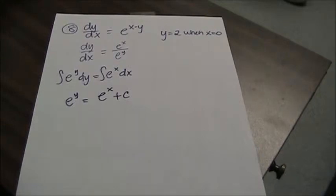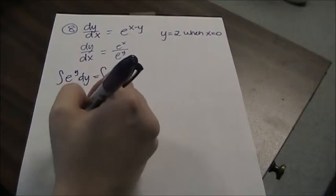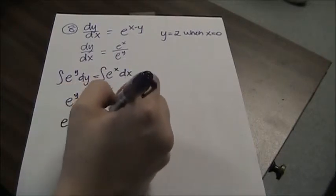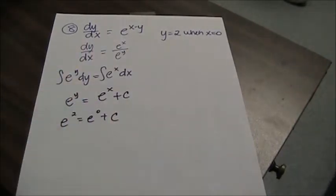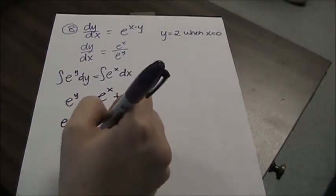And then when I plug in my initial values, I get e squared equals e to the 0 plus c. E to the 0, don't forget, is 1. So c equals e squared minus 1.